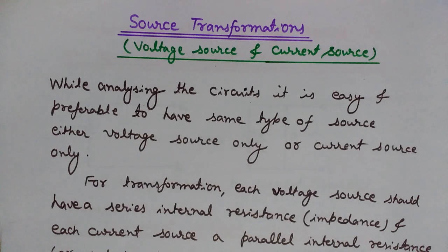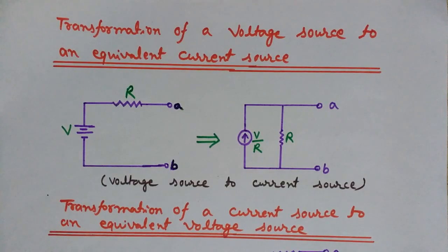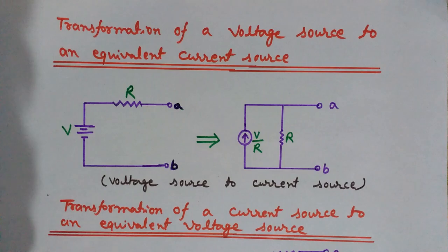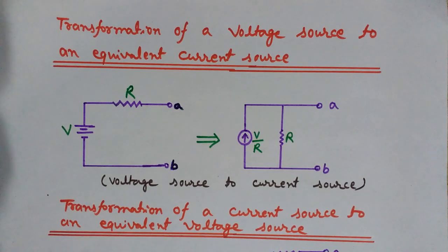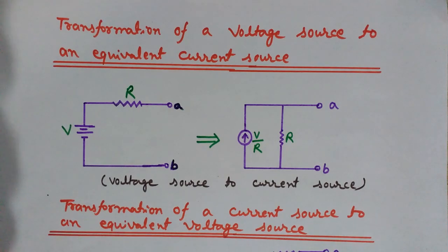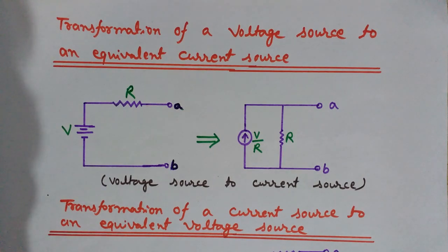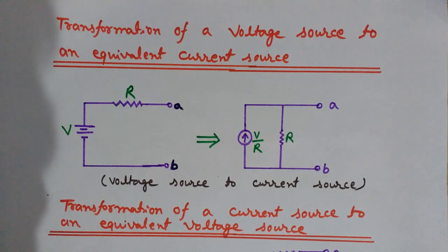It is important to note that while we analyze the circuits, it is easy and preferable to have the same type of source — either voltage source only or current source only. For transformation, each voltage source should have a series internal resistance or impedance, and each current source should have a parallel internal resistance or impedance.